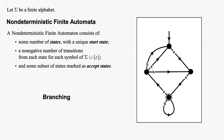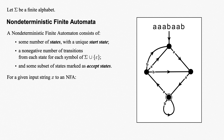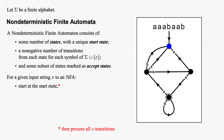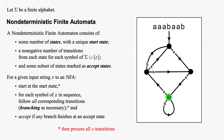In our first look, we defined the operation of an NFA via branching. Given an input string x, we start at the start state, then for each symbol of x in sequence follow all corresponding transitions, branching as necessary. We accept if any branch finishes at an accept state, and reject otherwise. Let's go back to our example NFA from last time and record a full account of the branches that come up for the input string AAAB, recording our configurations after each symbol of the input string.